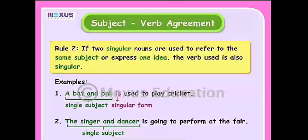Rule number two: if two singular nouns are used to refer to the same subject or express one idea, the verb used is also singular. For example: 'Bat and ball is used to play cricket.' 'The singer and dancer is going to perform at the fair.' 'The bread and butter is kept on the table.' These nouns are joined with 'and' but are considered as one idea.